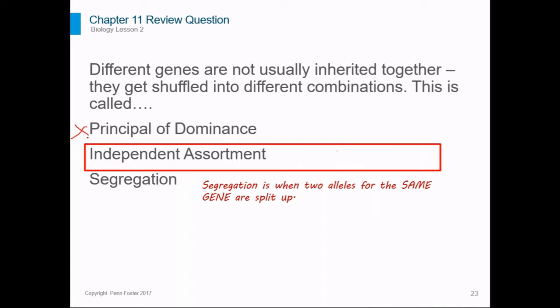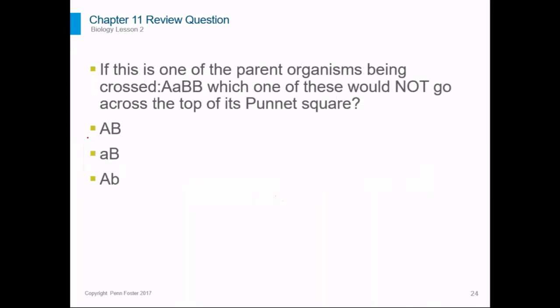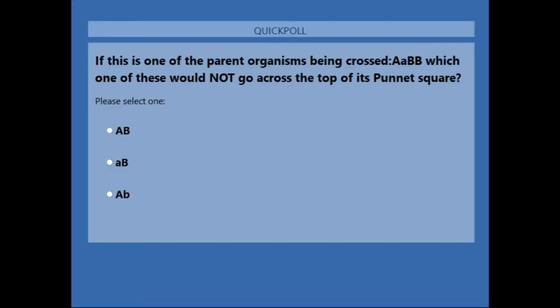One more review question about making Punnett squares. If we have a mom plant and a dad plant, and the mom plant's genotype is capital A, little a, capital B, capital B — when we go across the Punnett square, we're going to find every combination we can of those letters. Which one of these combinations would not show up in that Punnett square? Take a chance to think about and answer that question.